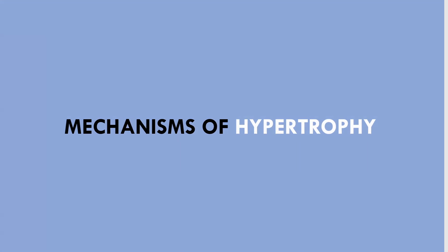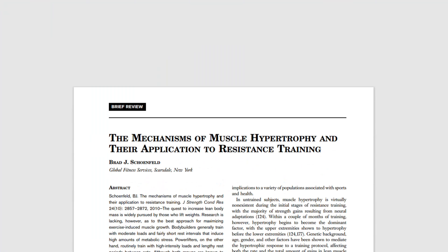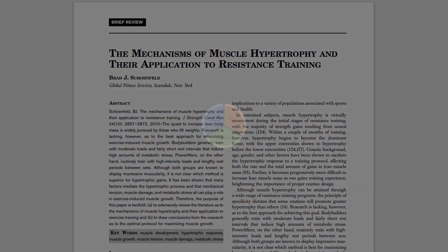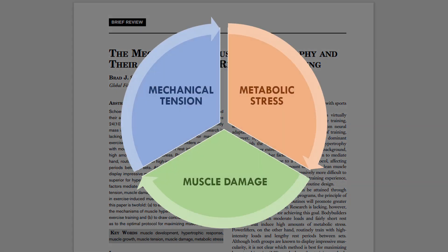This research review aimed to identify what the driving factors of muscle hypertrophy are. It was concluded that there were three potential mechanisms responsible for promoting muscle hypertrophy: mechanical tension, metabolic stress, and muscle damage.